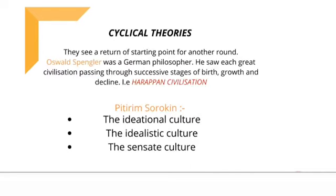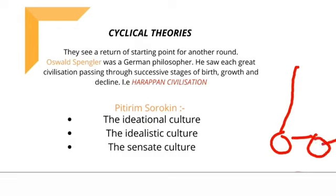Now the cyclical theory of social change. Cyclical theory — for example, this like a pendulum with a bob — it swings back and forth. Social change, according to cyclical theory, goes in cycles, not in a straight line.